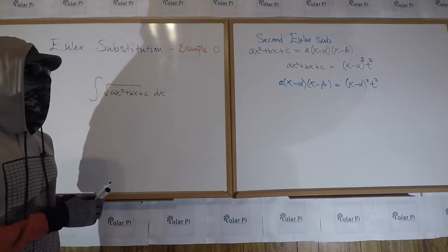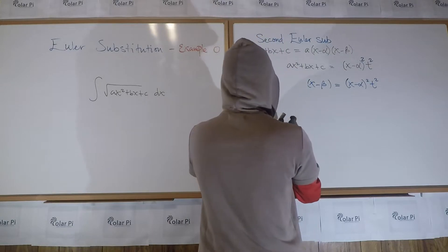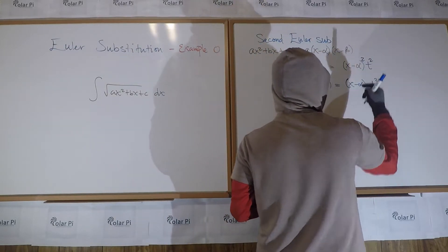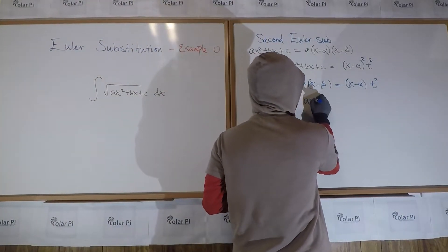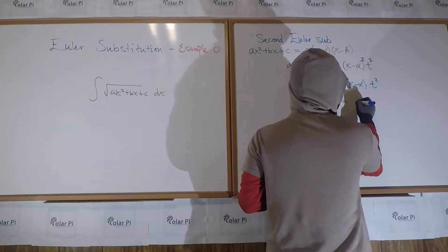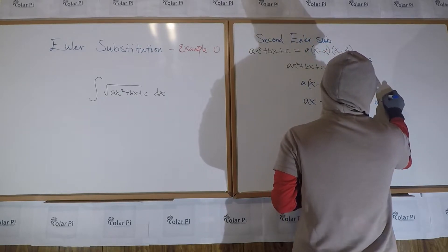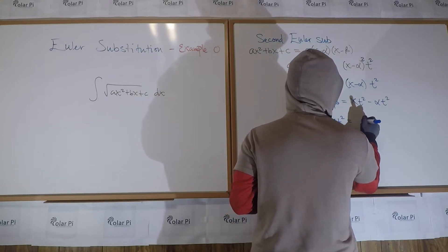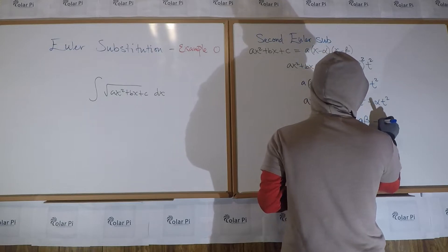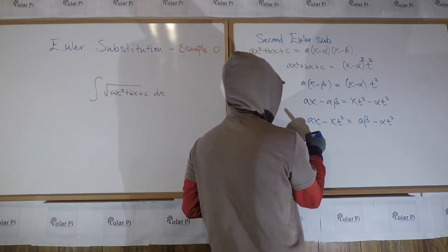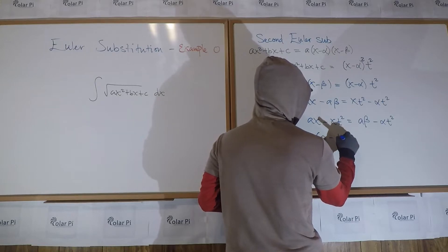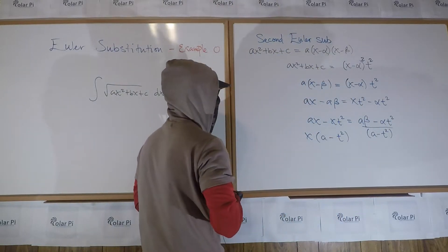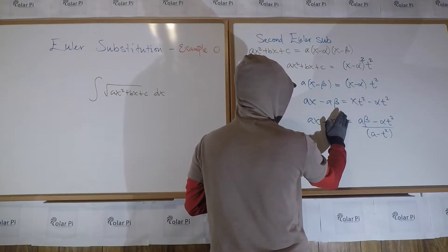Okay. And then, next, I could divide both sides by x minus alpha. And when I do, I'm going to get, on the left, I'm going to get a times x minus beta, and then on the right, one of the x minus alpha factors is gone. And so, now, I get ax minus a beta is equal to x t squared minus alpha t squared. And if I collect items that have x's in them, then I get ax minus x t squared equals a beta minus alpha t squared. And, obviously, factor out an x from the left. So, x times a minus t squared is what we'd get. And so, clearly, x is going to be, divide both sides by a minus t squared.